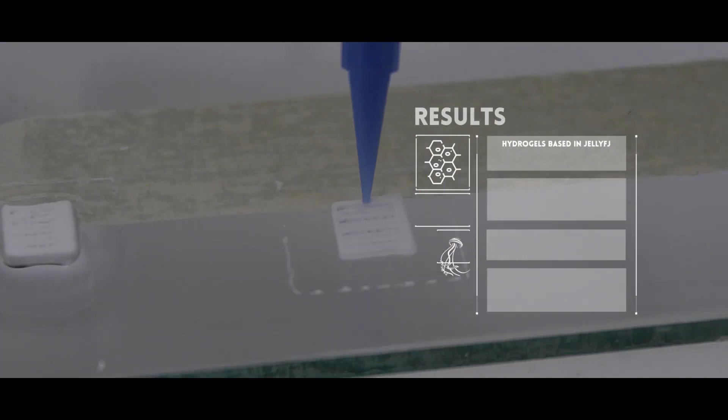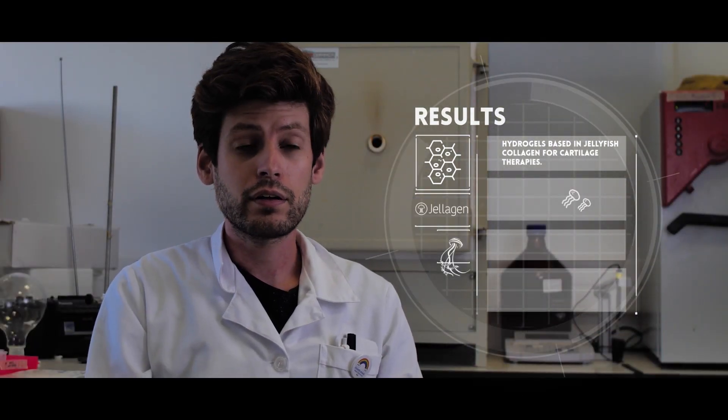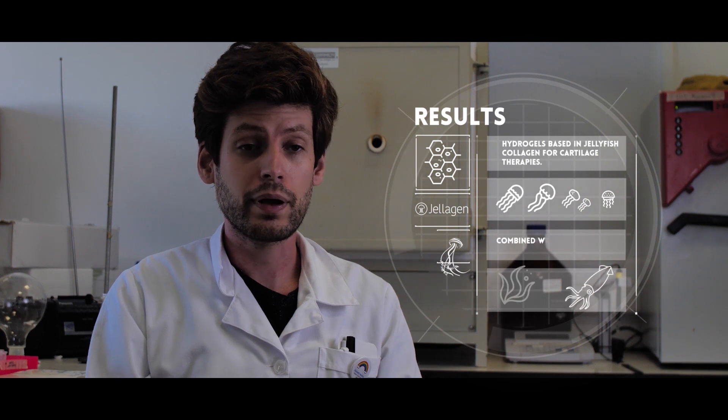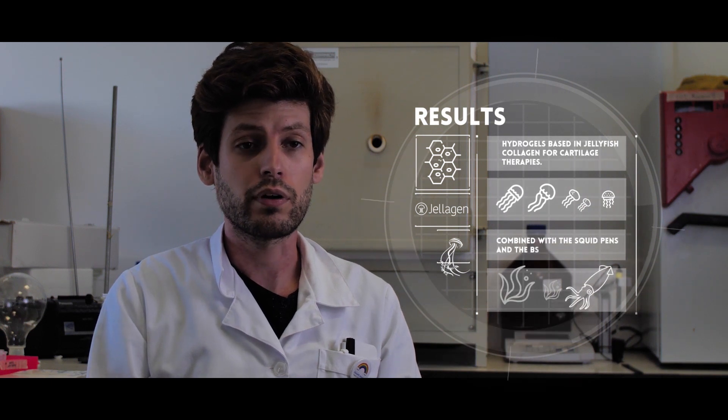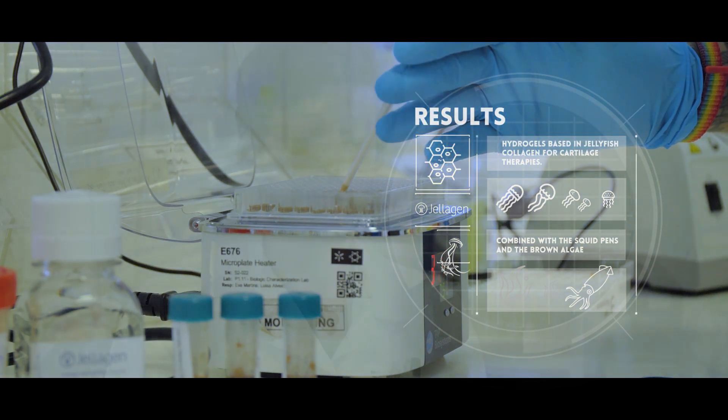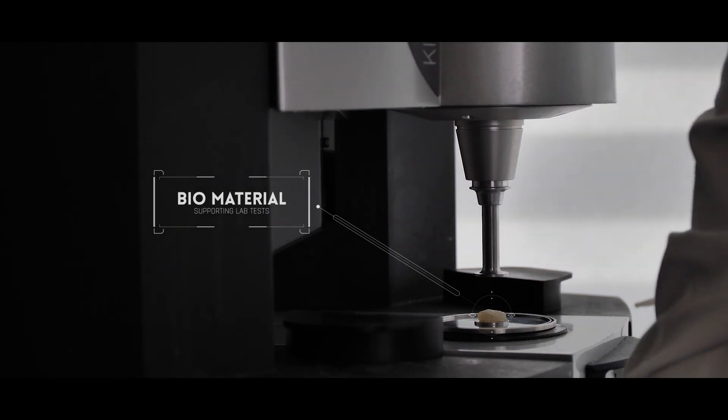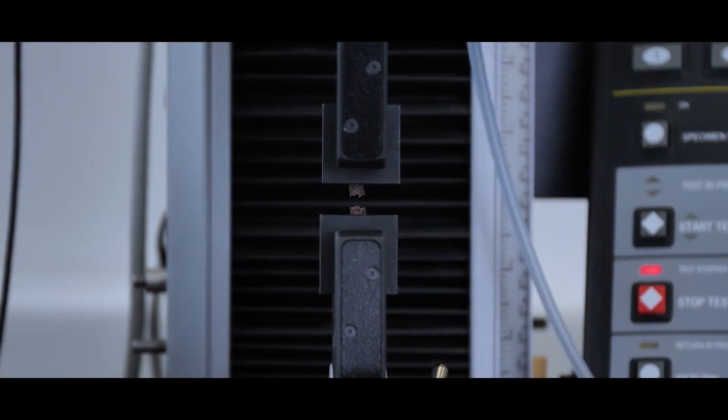We have tried to develop hydrogels using collagen from jellyfish produced by Jellagen, combined with other marine origin biopolymers such as the chitosan from the squid pens and the fucoidan from the brown algae. These materials are produced without any external cross-linking agents and demonstrate good mechanical properties and can support the viability of cells, also to support the stem cells to promote the chondrogenic differentiation.